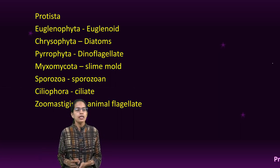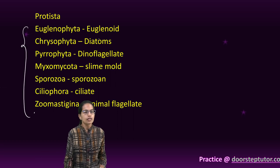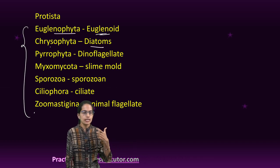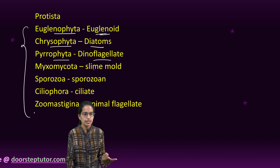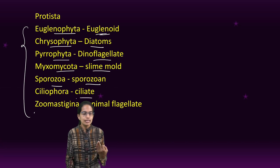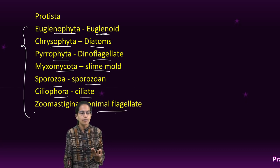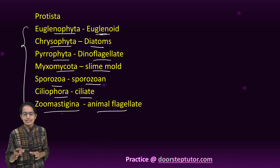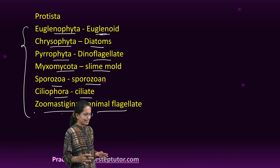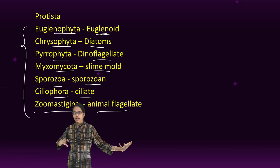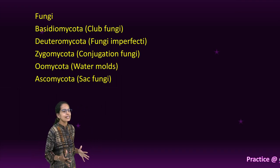There are various types of Protista: Euglena under Euglenophyta, diatoms under Chrysophyta, dinoflagellates under Pyrophyta, slime molds under Myxomycota, sporozoans under Sporozoa, ciliates under Ciliophora, and animal flagellates under Zoomastigina. Protista is called a connecting link because it connects Monera, which is prokaryotic, to the higher-order eukaryotes.